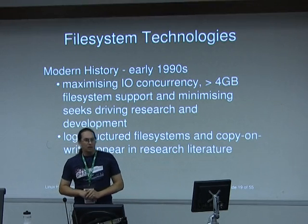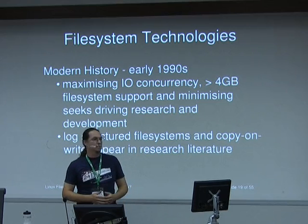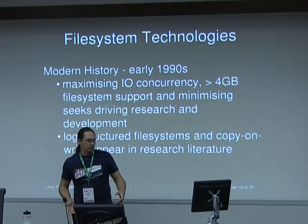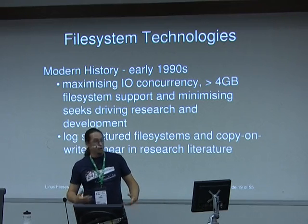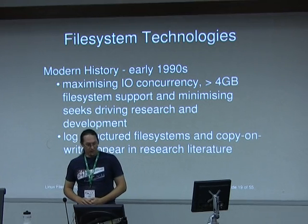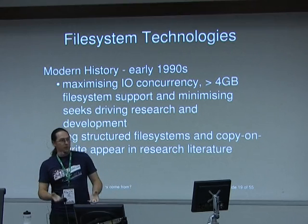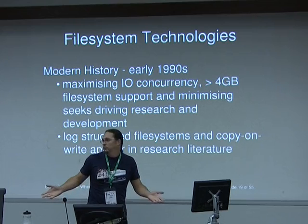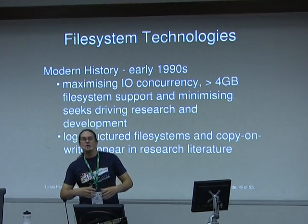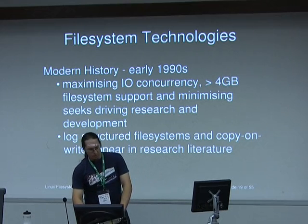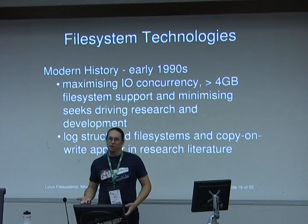In modern history — early 1990s — IO concurrency became an issue because technologies like RAID had appeared, with a single file system spanning many disks. SGI was shipping machines with a thousand disks and a single file system. Moving on from journaling for crash resilience, log-structured file systems appeared: why write to a journal and then somewhere else when you can just have a file system made out of a journal? These technologies generally took five to ten years to appear in anything other than a research file system.